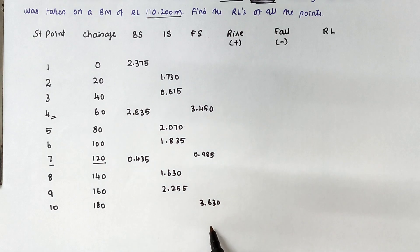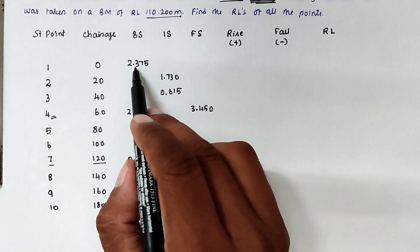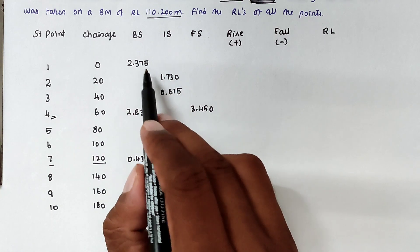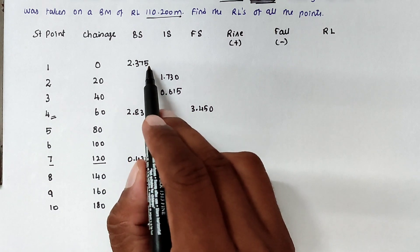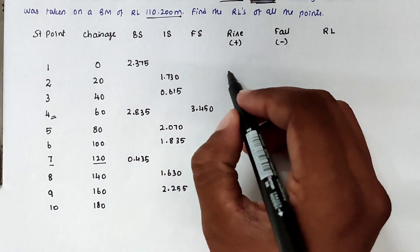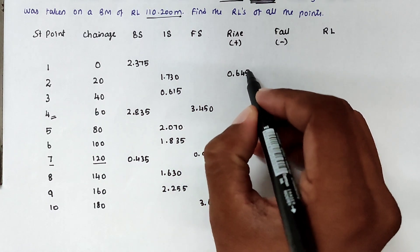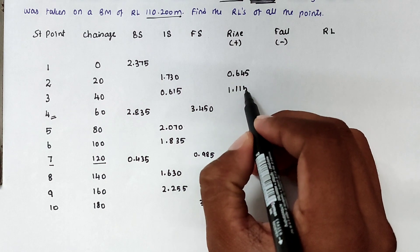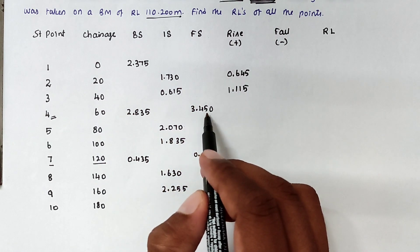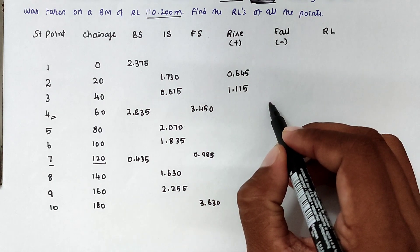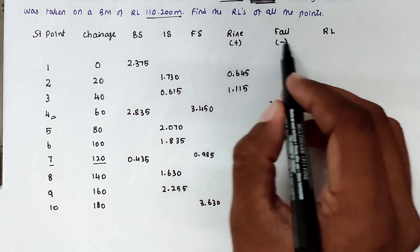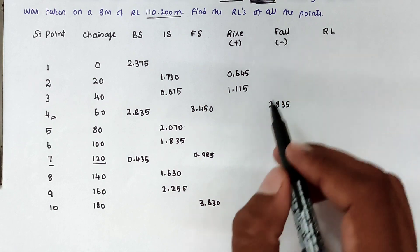Now we can find the rise or fall values. The backside is 2.375 and the intermediate side is 1.730, so 2.375 minus 1.730 gives a positive value of 0.645 — written in the rise column. Next, 1.730 minus 0.615 gives 1.115, also a rise. Then 0.615 minus 3.450 gives a negative value of 2.835, written in the fall column.